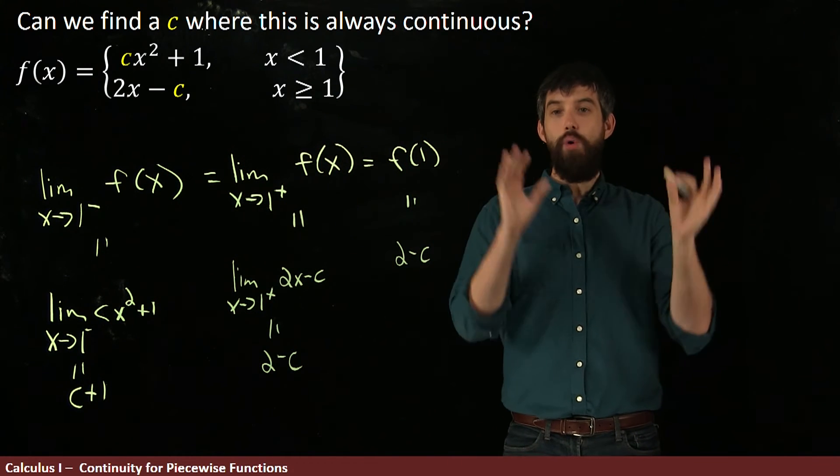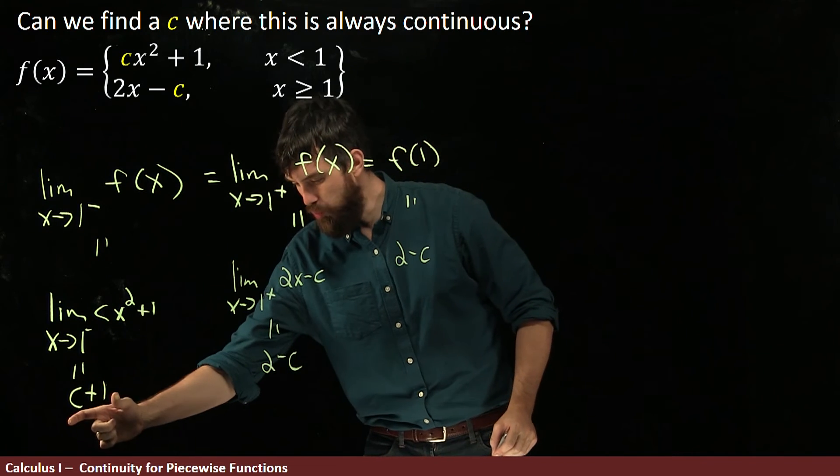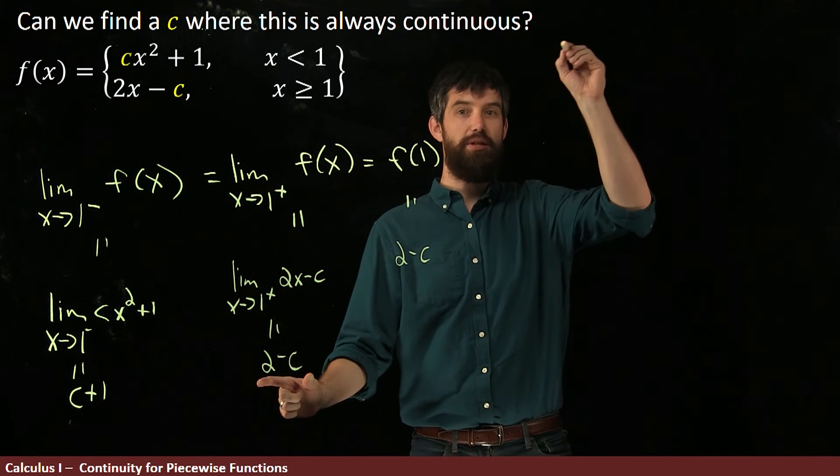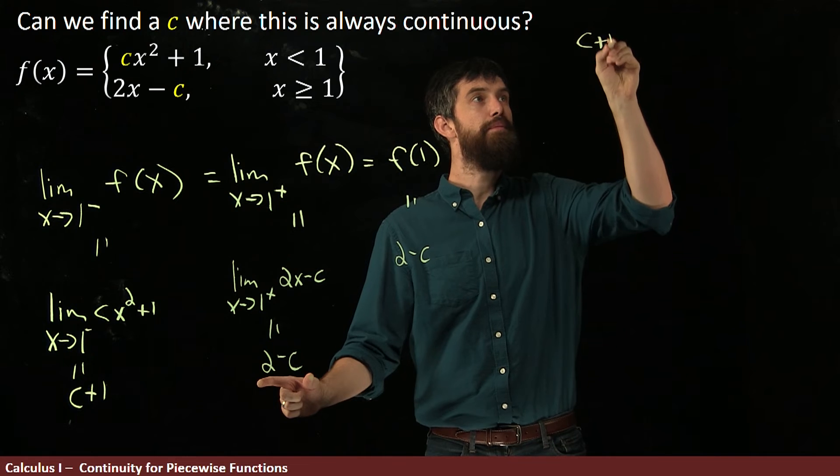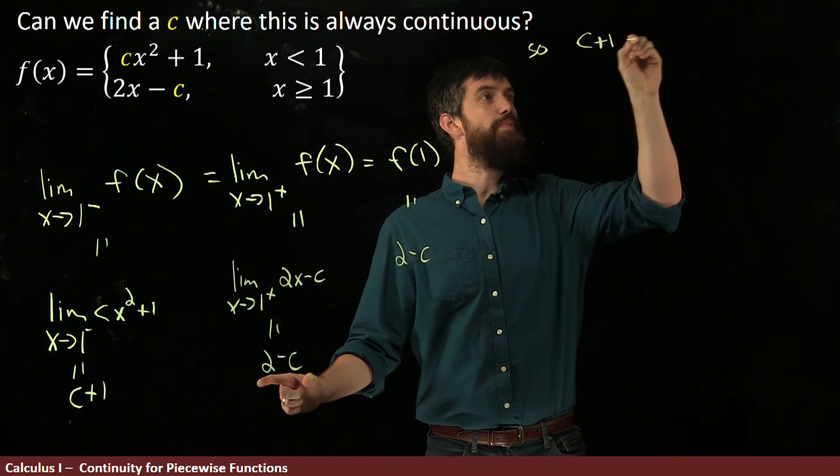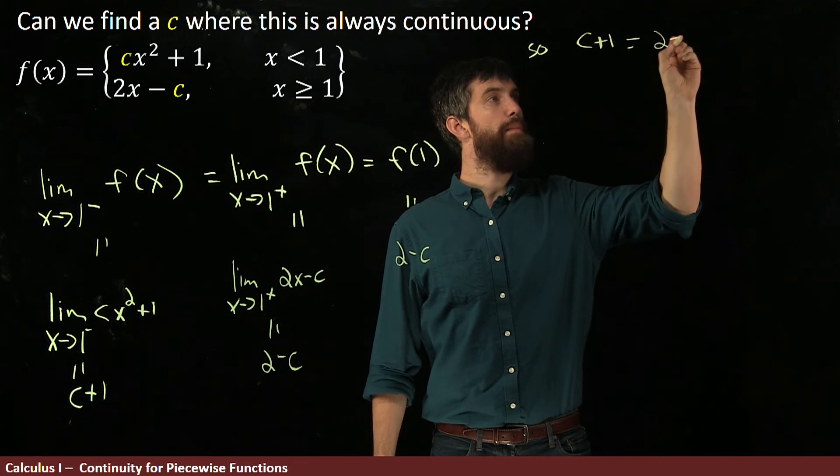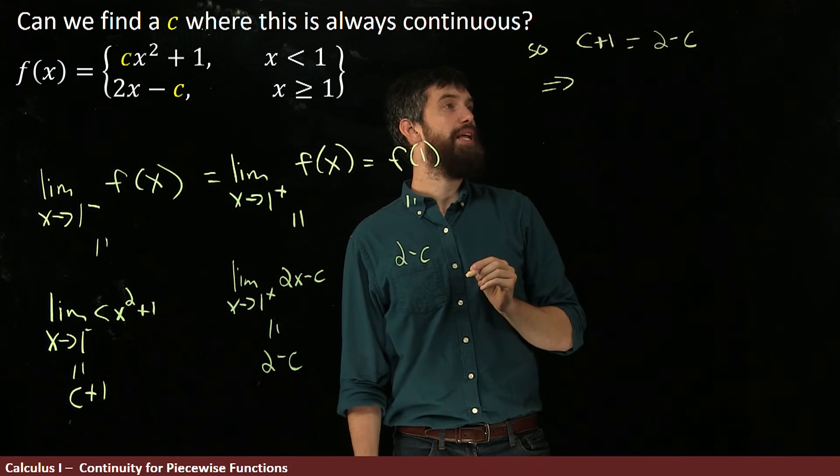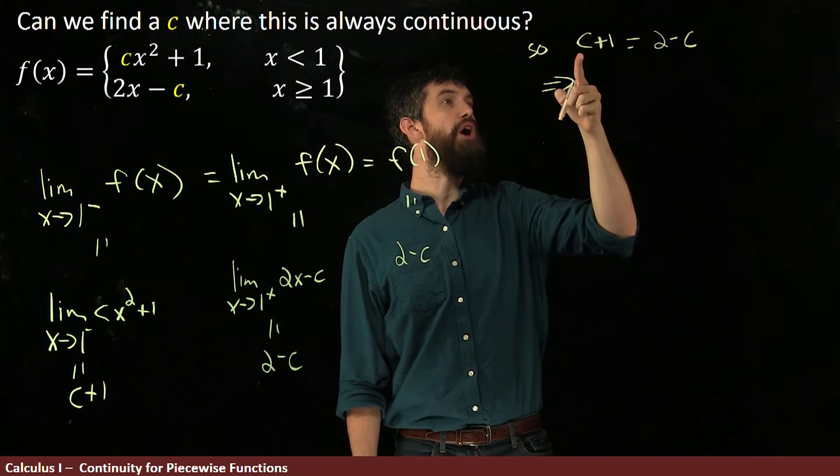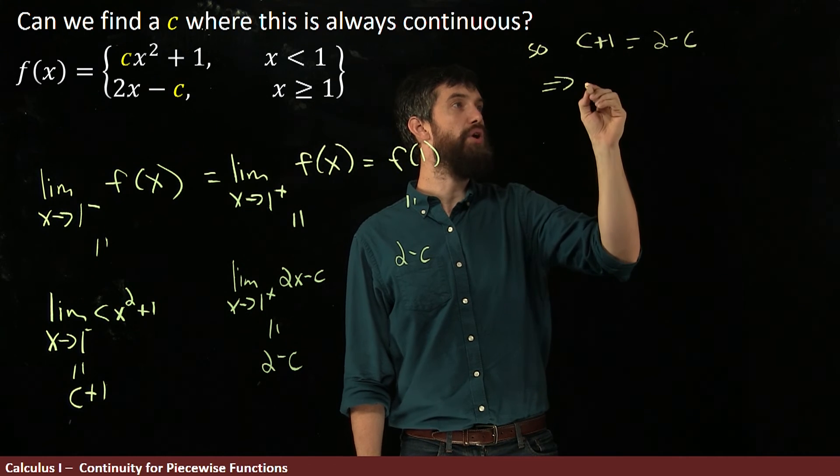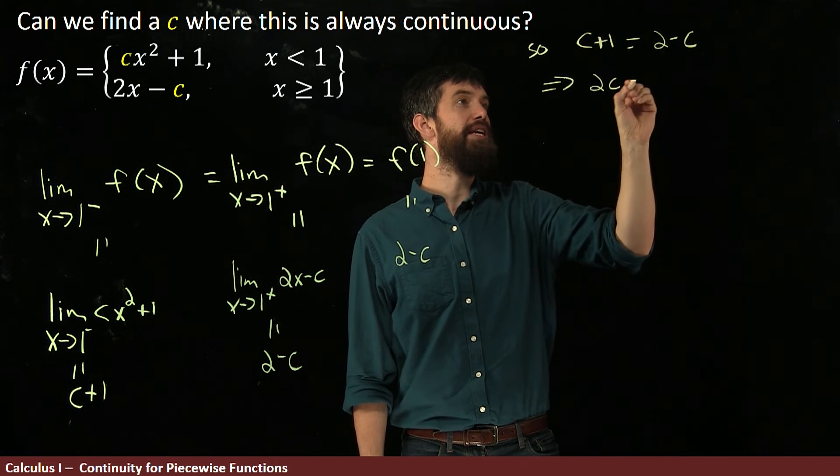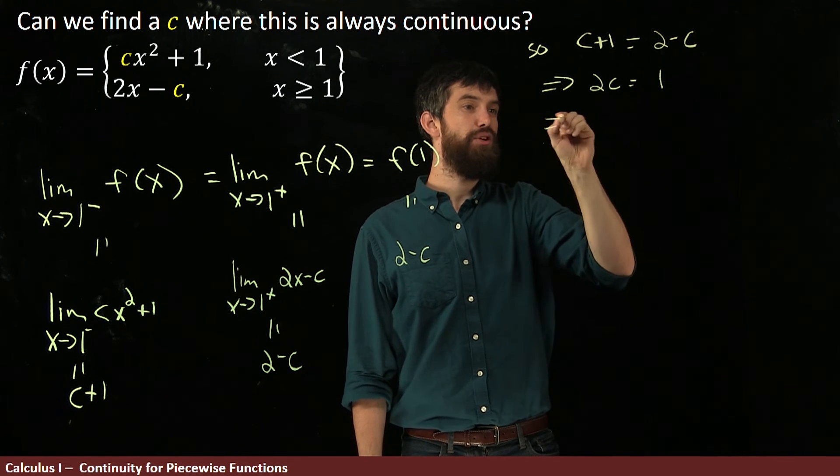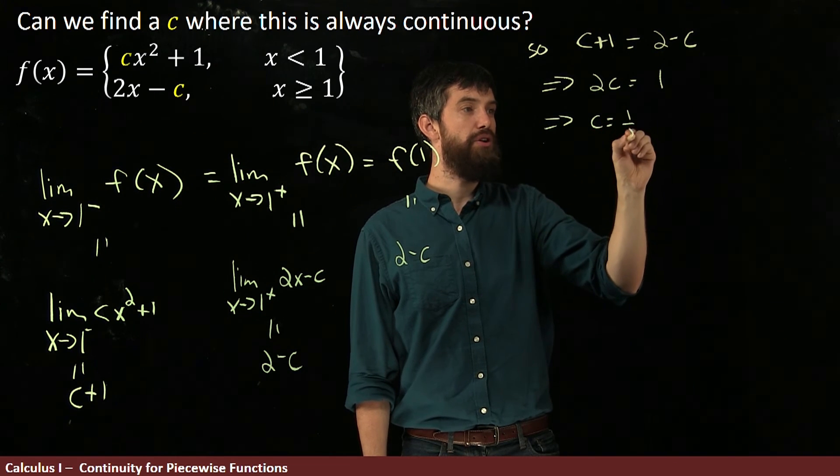So this gives me an equation. It tells me that I want c plus 1 to equal 2 minus c. So let's do that. We're going to have c plus 1 to be equal to 2 minus c. And then if I do a little bit of manipulation on this, I'm going to move this c over and this 1 I'm going to subtract off. So I'm going to have a 2c is equal to 1. And so finally I have c equal to the value of 1 half.